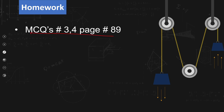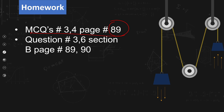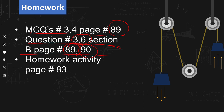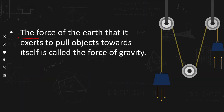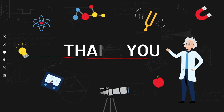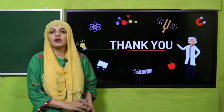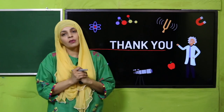For homework, do MCQ number 3 and 4 on page 89, and question number 3 and 6 from Section B on pages 89 and 90 in your notebooks. Also do the home activity on page 83. Wrap up: The force of the earth that it exerts to pull objects towards itself is called force of gravity. I hope you enjoyed the lecture — keep everybody around you safe, have a good day, thank you so much.